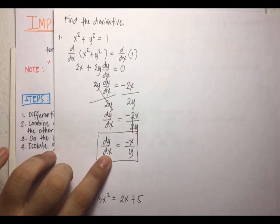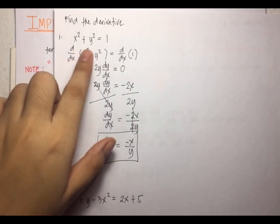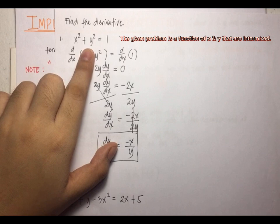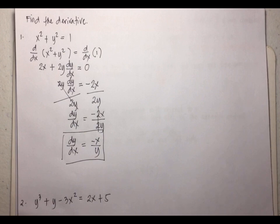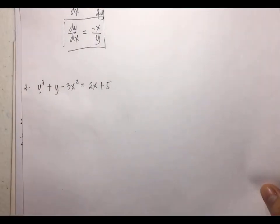Our derivative is a function of both x and y — and that's because the original problem was a function of x and y. Again, when x and y are combined, we leave it as is and take the derivative of every term, always remembering that whenever you take the derivative of y, you multiply it by dy/dx.